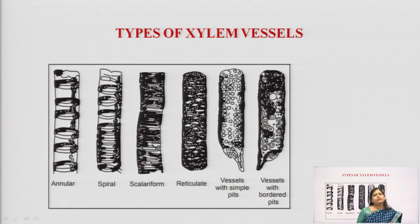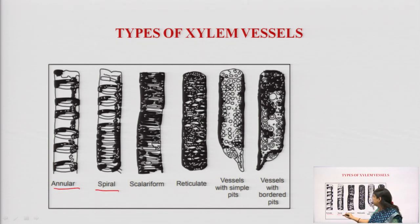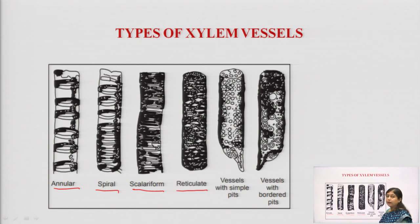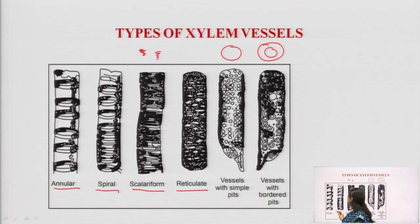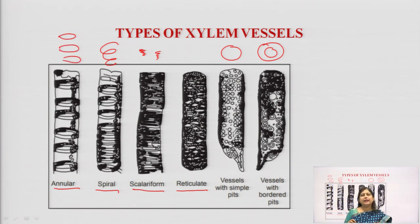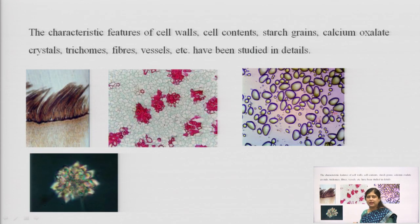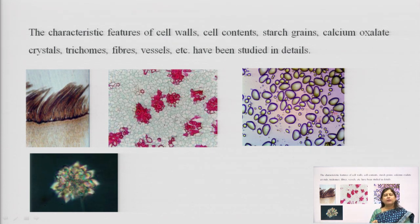We also have different types of xylem vessels present in the stem and root which can be identified easily using the microscope. Few types are: annular, spiral, scalariform, and reticulate. Vessels can have simple pits or bordered pits — simple pits are circular while bordered pits are double circular. In scalariform there is deposition of lignin on the surface of the xylem. Spiral has a spring-like structure and annular has a ringed structure. We can note that a particular drug will have a specific type of xylem vessel, so a different xylem vessel in a sample indicates adulteration.